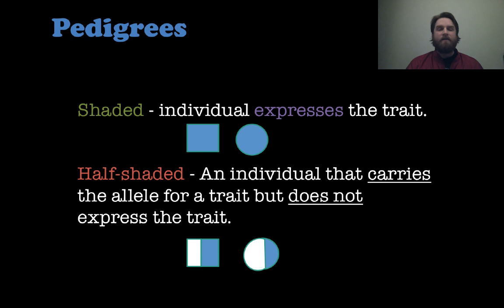So if a square or circle is shaded, that means that individual is expressing whatever trait we are looking at. So you could be looking at some sort of phenotype that is controlled by one gene.